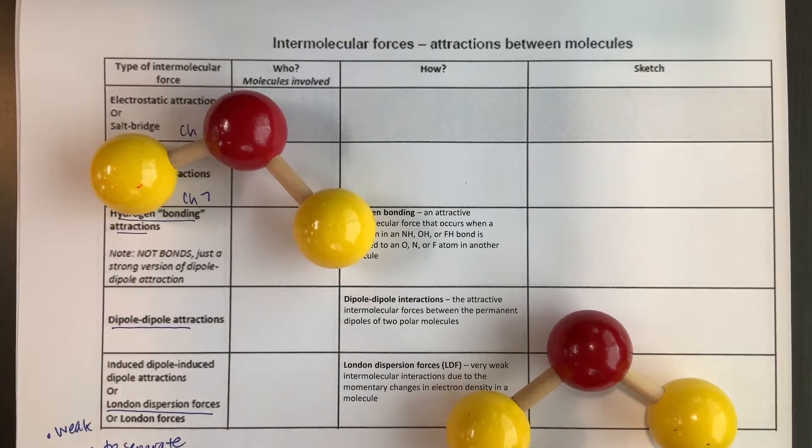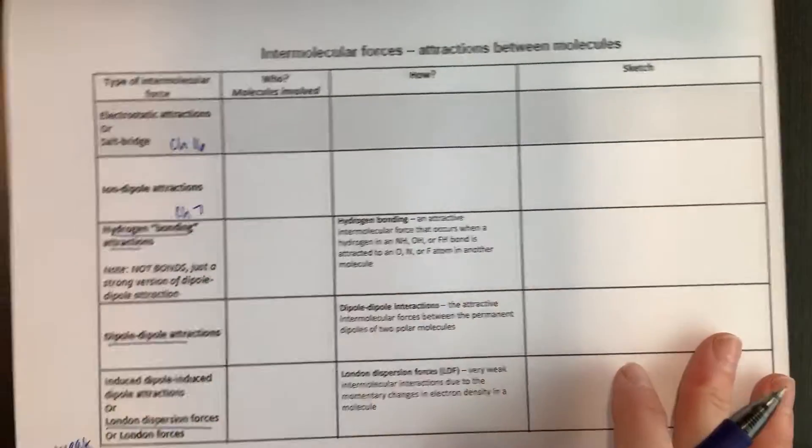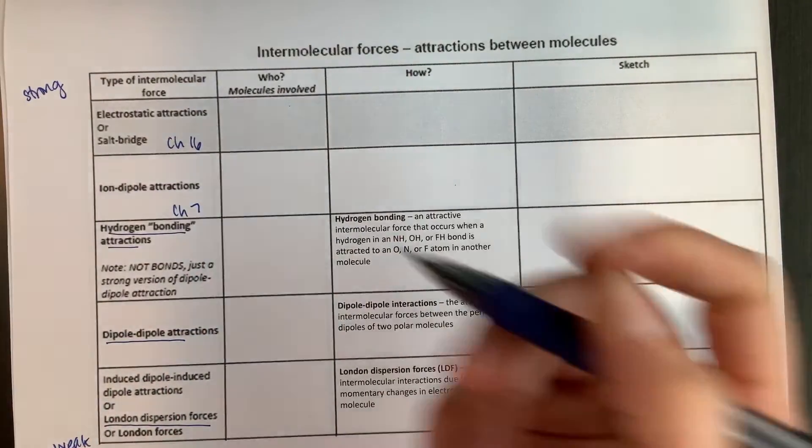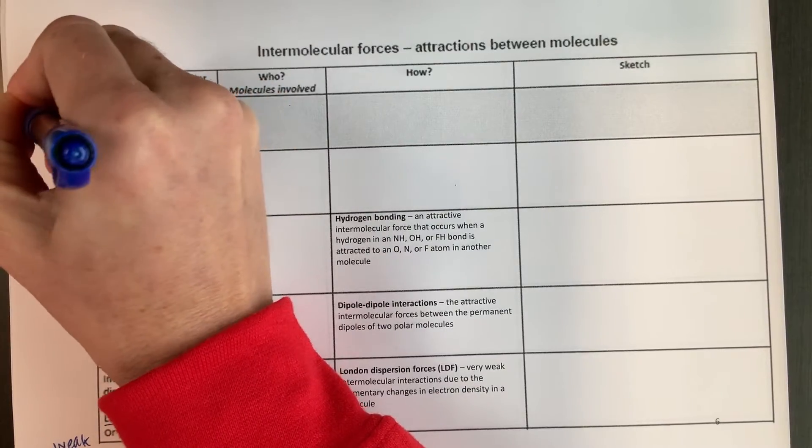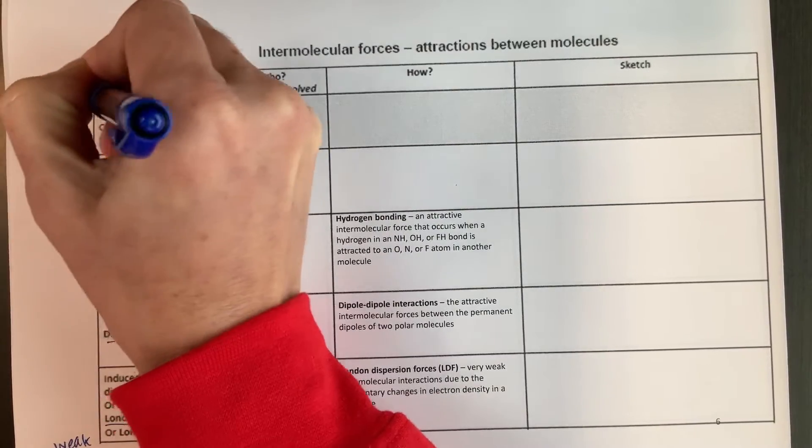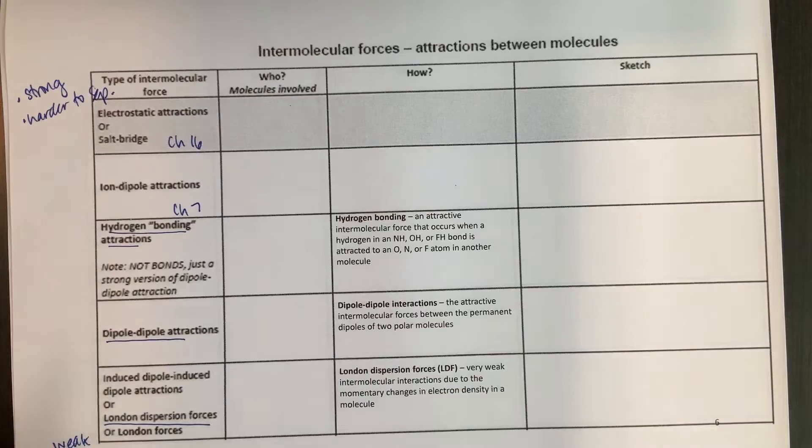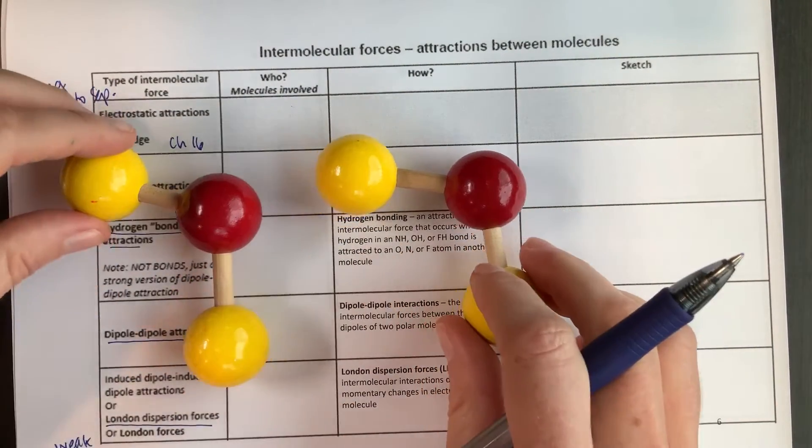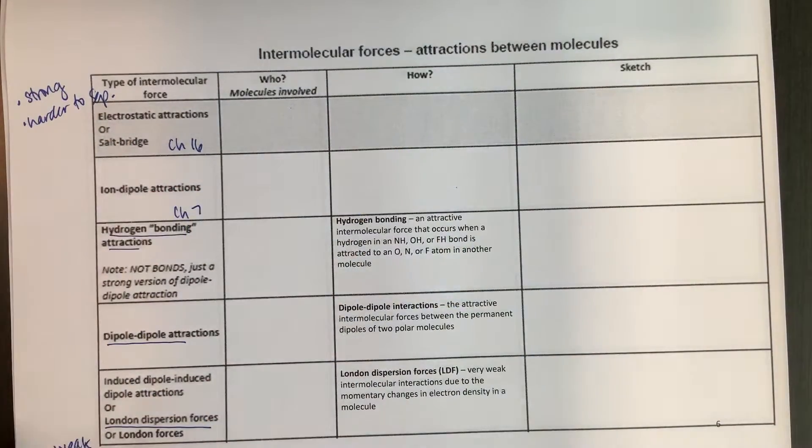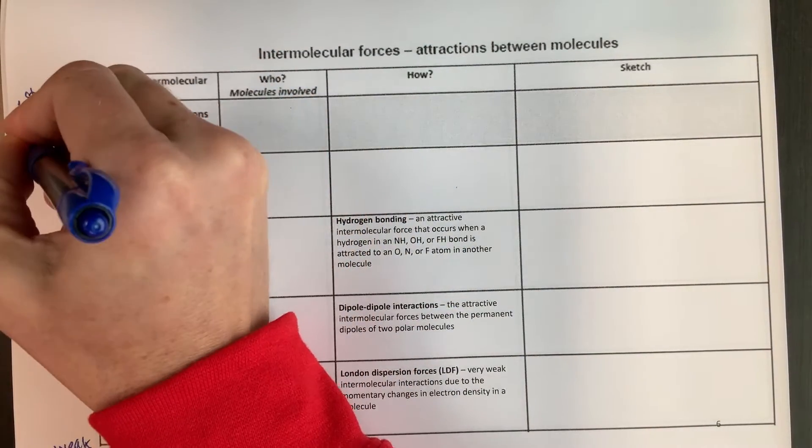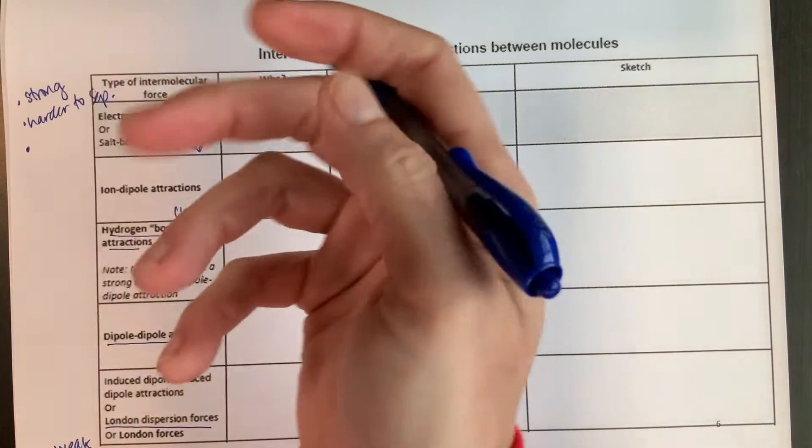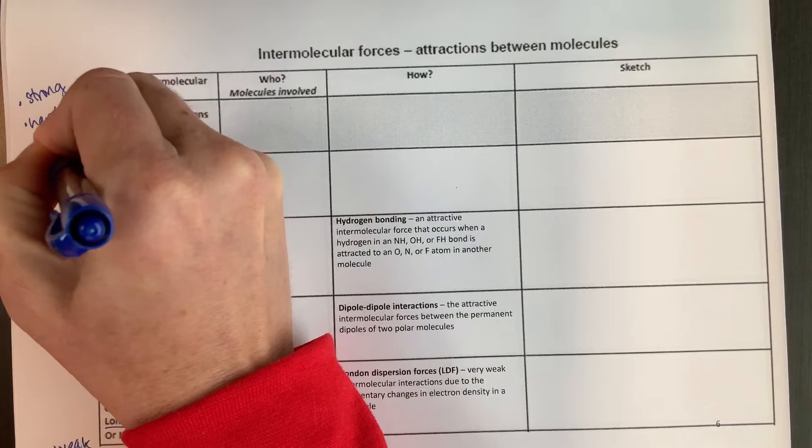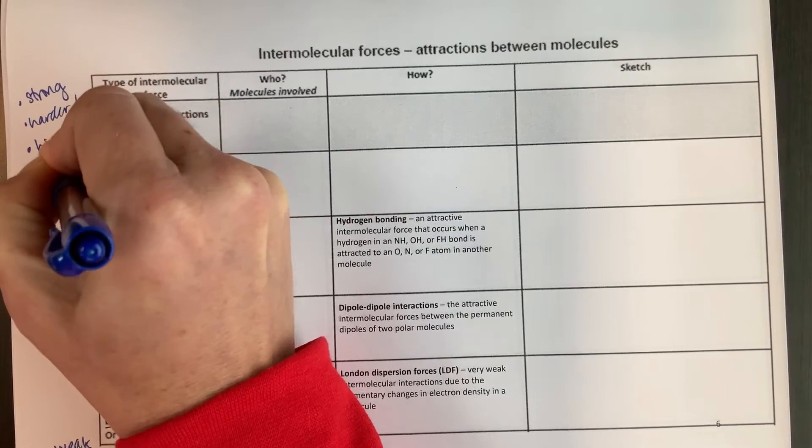At the other end of this, everything opposite is true. So up here, we're gonna be looking at our relatively strongest intermolecular forces, and so these are harder to separate, so they're just more stuck together. Still separate molecules, but a little bit harder to pull apart. And because they're harder to pull apart, that means they have higher melting and boiling points.